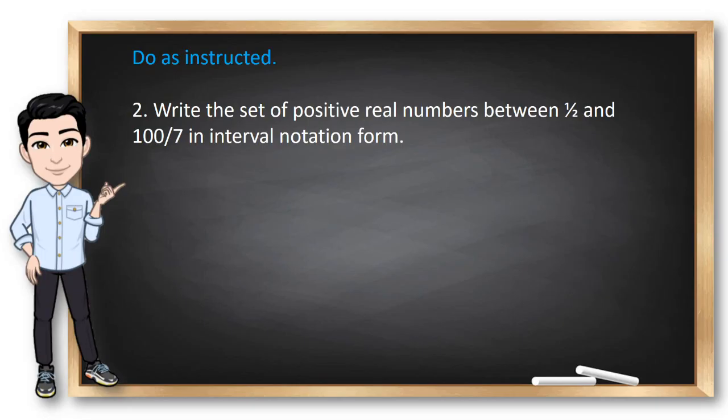In the next example, we need to write the set of positive real numbers between 1 half and 100 over 7 in interval notation. Now, I think this is easy because when we say between 1 half and 100 over 7 are not included in the set. So, I'm going to use open and close parenthesis on both sides. And this is now our final answer. But of course, if you want to define this using set-builder notation, it's like this. So, x is an element of r such that x is greater than 1 half but less than 100 over 7. Notice that I did not write any equal sign here because these are open and close parenthesis.